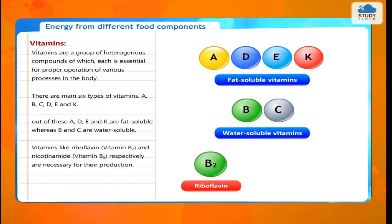Vitamins like riboflavin, vitamin B2, and nicotinamide, vitamin B5, respectively, are necessary for their production.